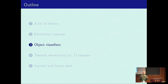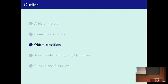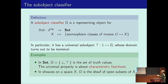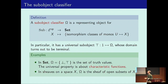Moving towards higher dimensions — why would we be interested from a logical perspective? Let's start by talking about the subobject classifier. A subobject classifier is a representing object for the functor which takes every object to the set of isomorphism classes of monomorphisms into that object. We regard a monomorphism as a subobject of X, and two monomorphisms that are isomorphic over X represent the same subobject. A subobject classifier Ω is a representing object for this, meaning every subobject of X is classified by a unique map from X into Ω.